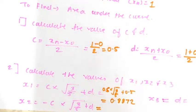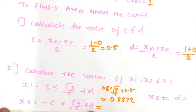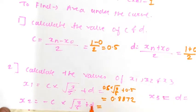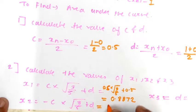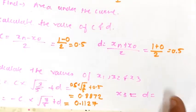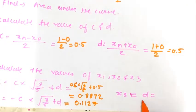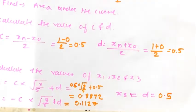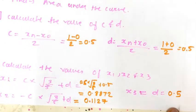Similarly, you have to find out the value of x2 by putting the values of c and d. c is 0.5 and d is 0.5. Further simplifying, x2 will be 0.1127. Next, find out the value for x3, which is equal to d, so the value of x3 is 0.5. So we now have all the values: x1, x2, and x3.